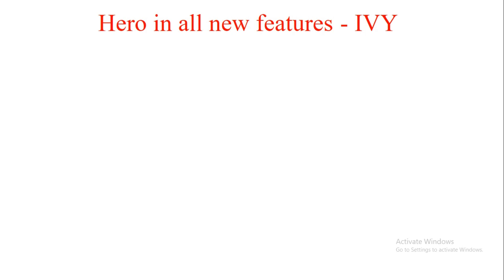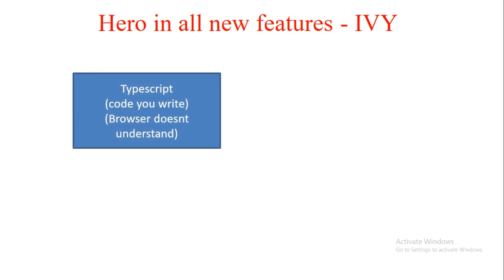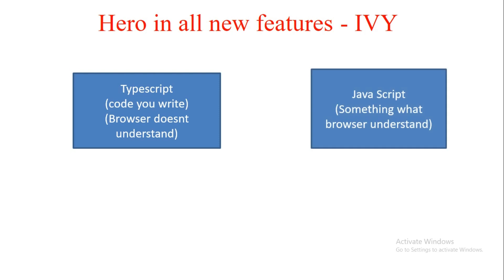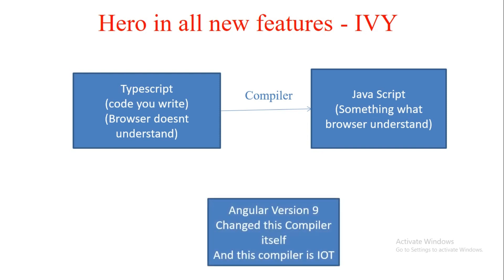So what are these three steps — compilation, runtime, and change detection? Whenever you write some code in TypeScript, the browser does not understand TypeScript; what the browser understands is JavaScript. So who will convert the code you write into the code the browser understands? This is the work of the compiler. The compiler converts your TypeScript code into JavaScript. Version 9 actually changed this compiler itself — the compiler initially used was JIT, that is Just-In-Time compiler, and they have changed it to AOT, that is Ahead-Of-Time compiler.